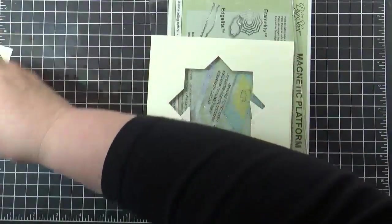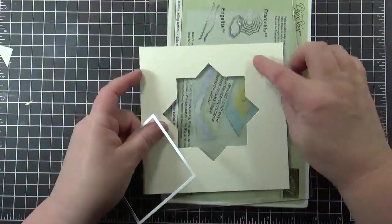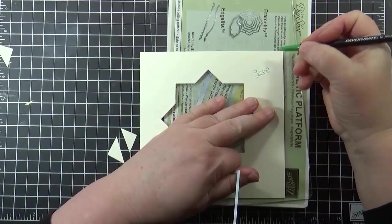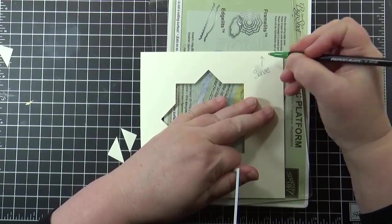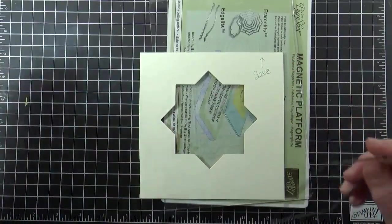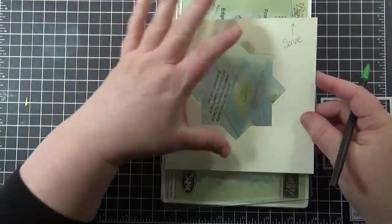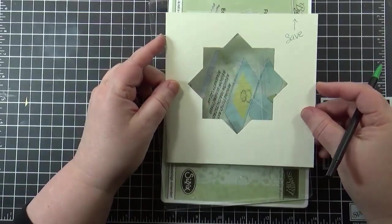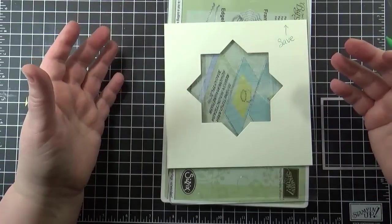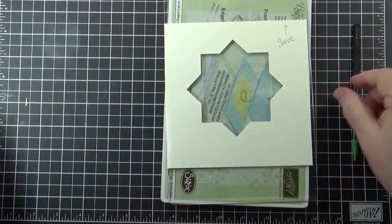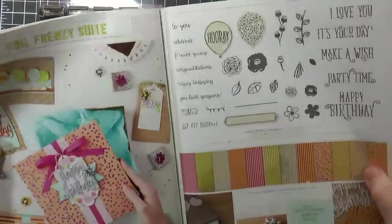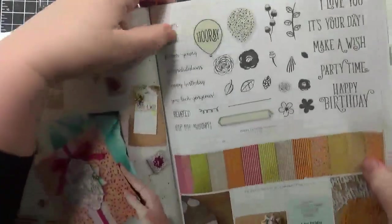So we're gonna go ahead and run that through. So it may not be exactly perfect but it's gonna be close enough for what we want to do, and that is how you get your template. Now when I create templates like these I want to save them and use them over and over and over again. So I write 'save' up in the corner here and then also I'm going to put an arrow because that's where it's going to be in my Stamparatus.